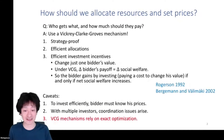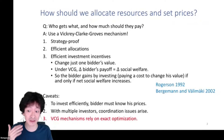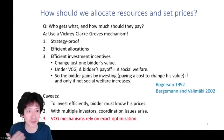The third thing, which is really the focus of this talk, is that VCG mechanisms rely very sensitively on exact optimization. Whoever's running the mechanism has to be able to compute the exactly optimal allocation. And it turns out that if you're wrong even a little bit, that can undermine the properties of the mechanism in a big way.